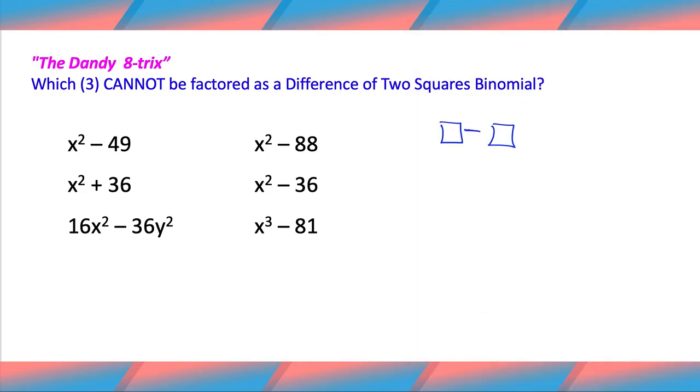So let's take a look back at our questions here. We have x squared minus 49. So x squared is indeed a square, 49 is indeed a square, and then it's a minus in the middle. So you're okay.